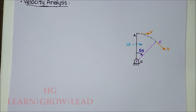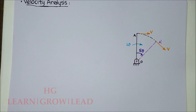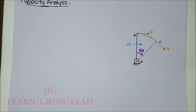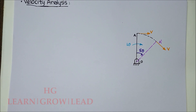For velocity analysis, broadly we have two rows: one analytical method and two graphical methods. Here we focus on the graphical method. The graphical method is subdivided into two categories: the instantaneous center method and the relative velocity method.